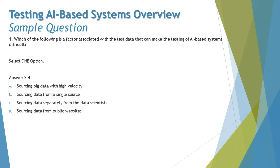The very first question: which of the following is a factor associated with the test data that can make the testing of an AI-based system difficult? These are very straightforward questions. Whenever you have such questions, all you have to do is remember the exact pointers from the syllabus about these challenges. Let's pick up each option and try to understand what exactly they stand for.